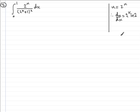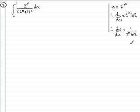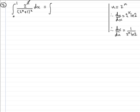We have du/dx, and what we do now is invert this: dx/du equals 1 over 2^x times natural log of 2. We do this to switch the variables. Forgetting about the limits just for the moment, we'll have an integral where on the top we have 2 to the power x, which we can see is u.